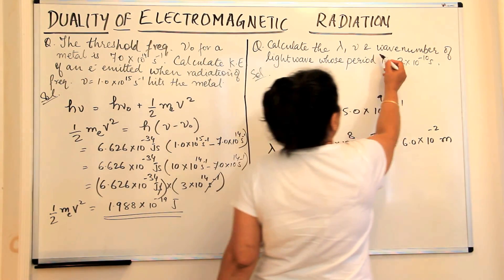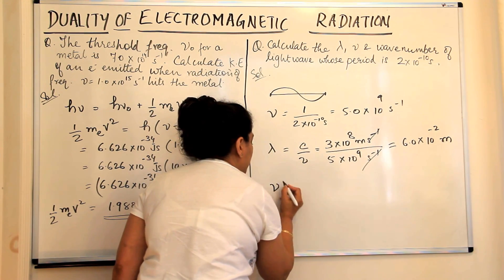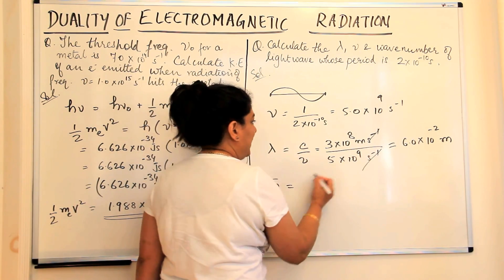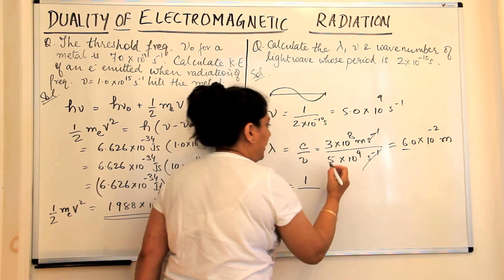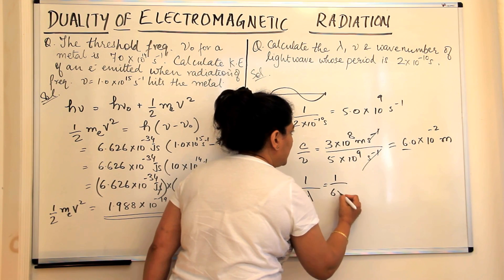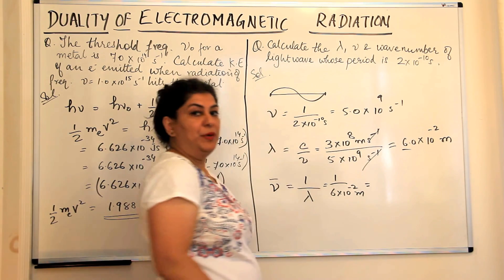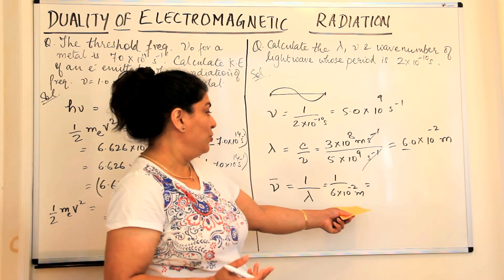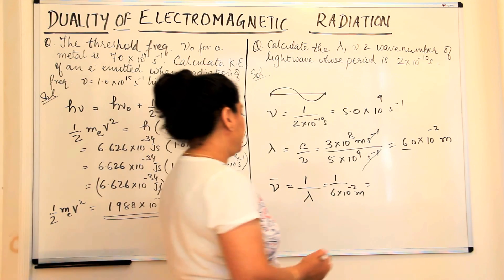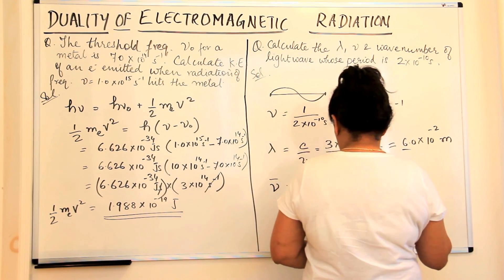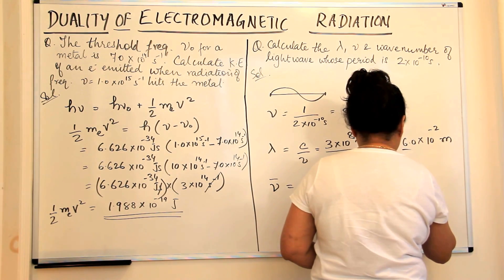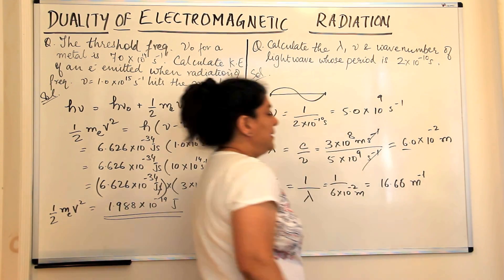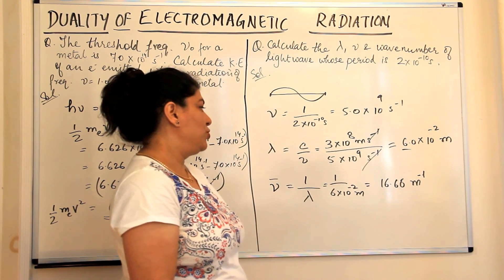The next part of the question asks for wave number. Wave number, represented by ν̄, is the inverse of wavelength. Therefore, using the wavelength we calculated, wave number = 1/λ = 1/(6 × 10⁻² meters). The unit for wave number is the inverse of the unit for wavelength, so it will be meter⁻¹. When we calculate this, it comes to be equal to 16.66 meter⁻¹. That is the wave number.